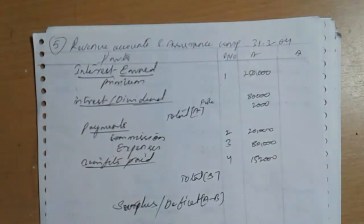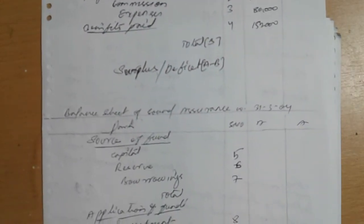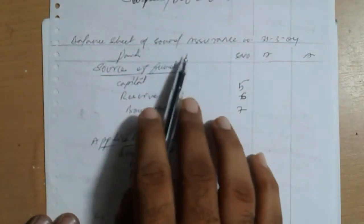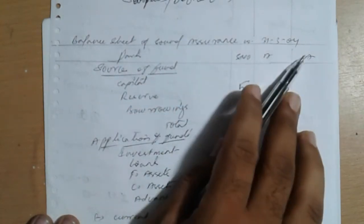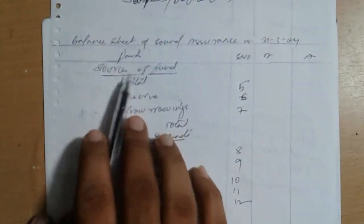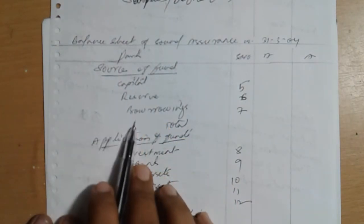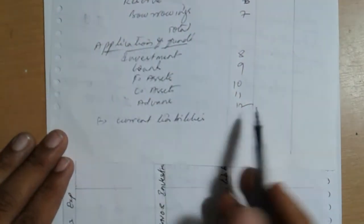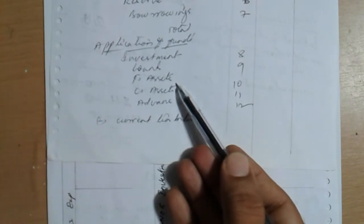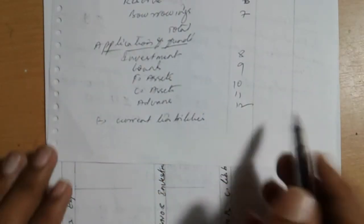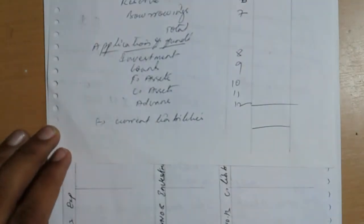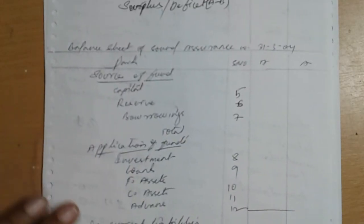Schedule four. Next fifth. Fifth is direct. Calculation will come later. Fifth under source of funds. Balance sheet of Son Assurance Company 31st March 2004. Source of fund: capital, reserve and borrowing. Assets side: application of funds, assets including investment, loans, fixed asset, current asset, advance. Total means current liabilities minus to get the answer.